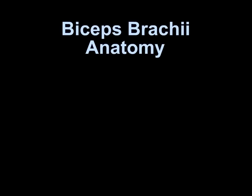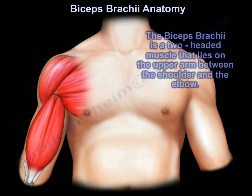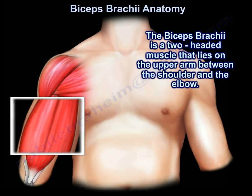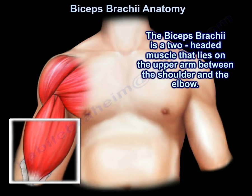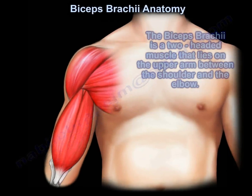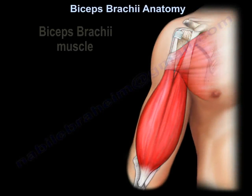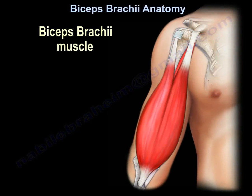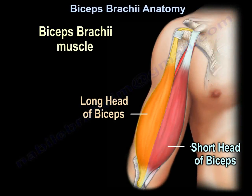Biceps brachii anatomy. The biceps brachii is a two-headed muscle that lies in the upper arm between the shoulder and the elbow. You can see here the long head of the biceps and the short head of the biceps.